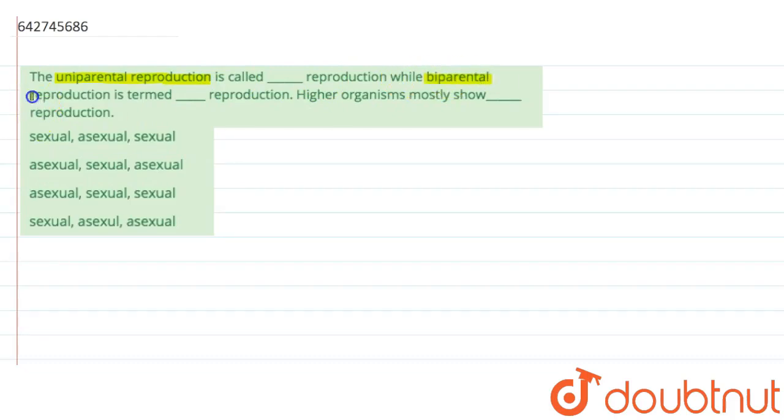While the biparental reproduction is termed as dash reproduction, and the higher organisms mostly show dash type of reproduction.